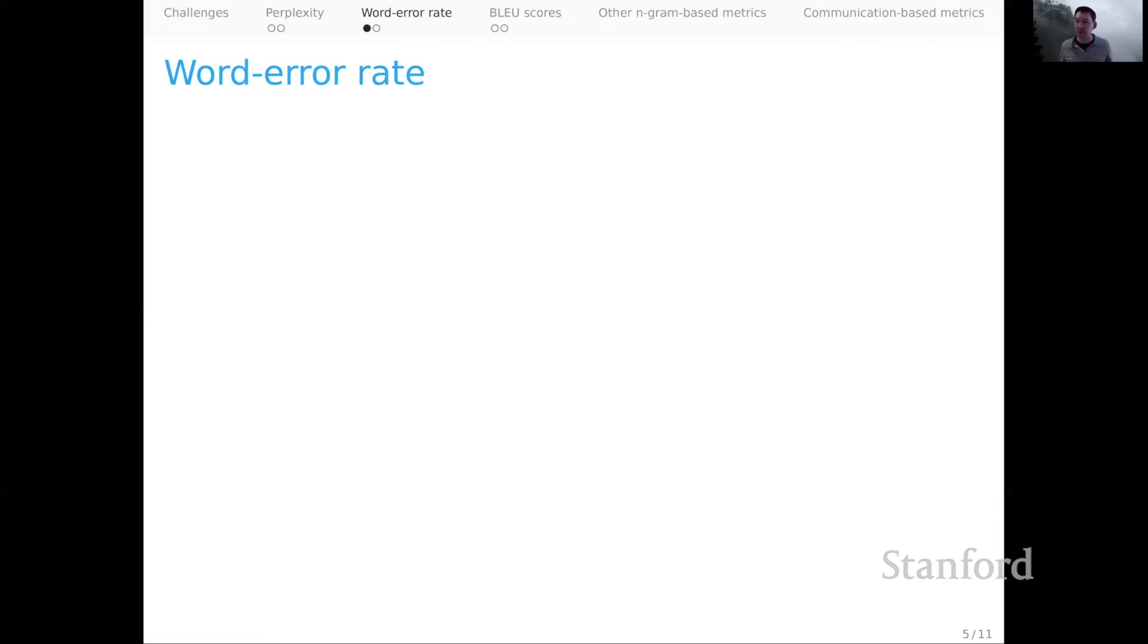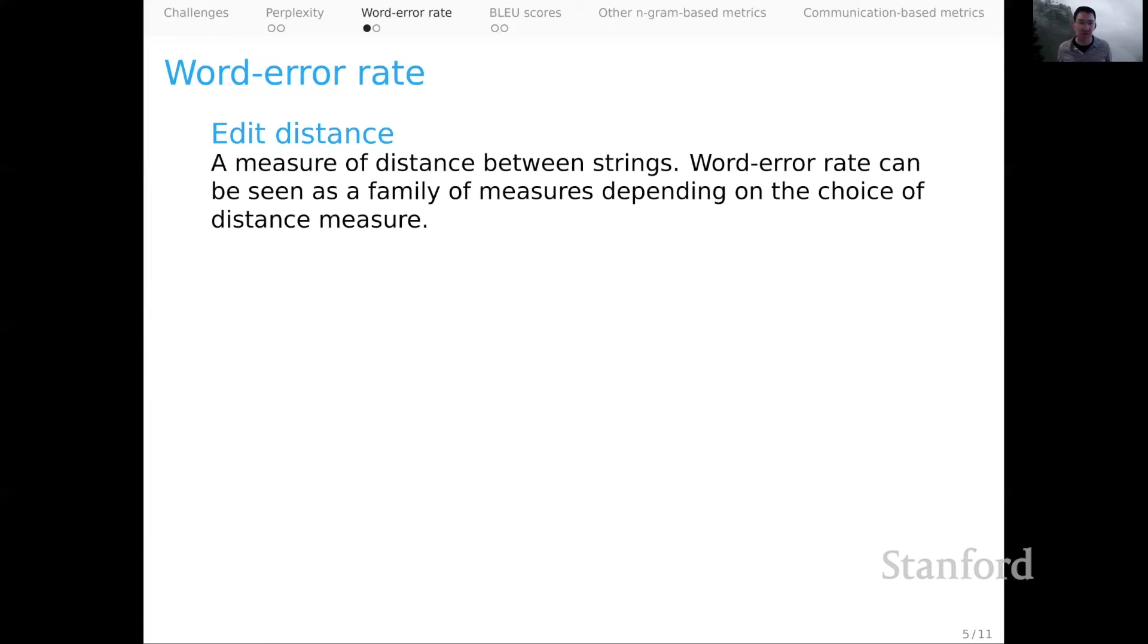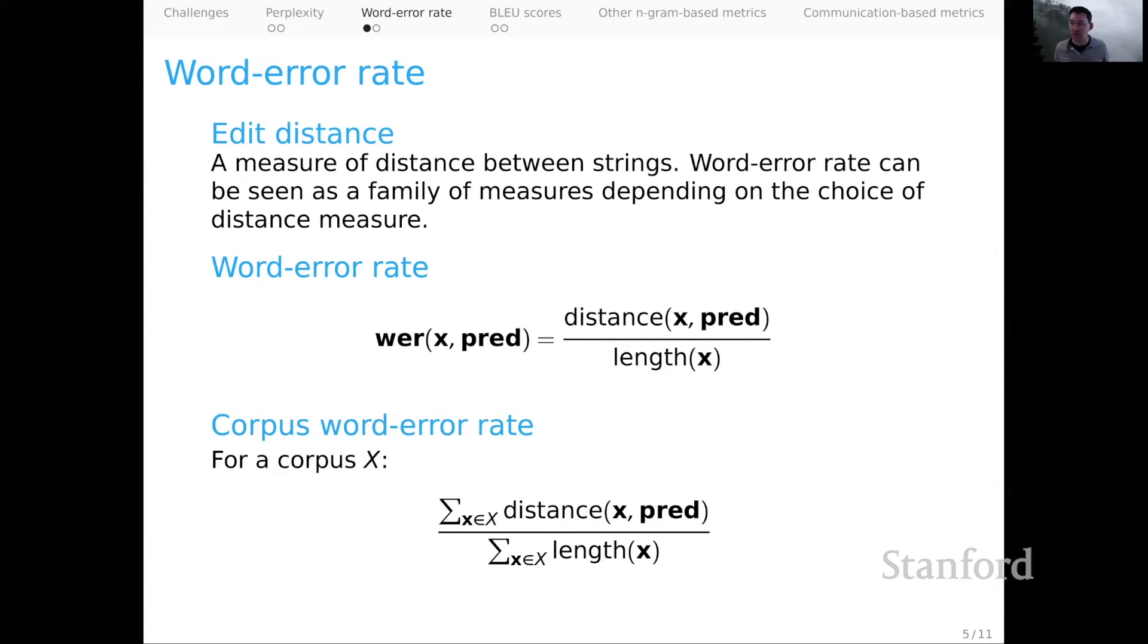Let's move on now into a family of what you might think of as n-gram based methods for assessing NLG systems, beginning with the word error rate. So the fundamental thing here will be an edit distance measure. And therefore, you can see word error rate as a kind of family of measures depending on the choice of the edit distance function, which we would just plug in. The word error rate is the distance between the actual sequence x and some predicted sequence pred normalized by the length of the actual sequence. And if we would like the word error rate for an entire corpus, it's easy to scale it up. But there's one twist here.